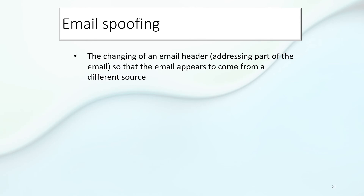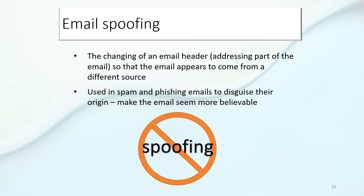Email spoofing: this is when the email header — the addressing part of the email — is changed so that the email appears to come from a different source. You think it comes from your bank or from someone you trust. It's used when sending spam or phishing emails, to disguise the origin of the email and make it seem more believable.